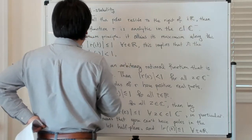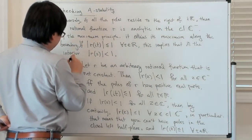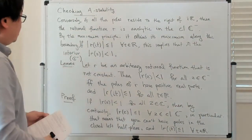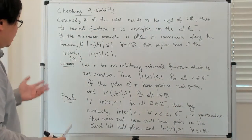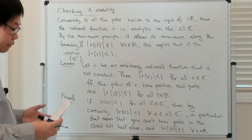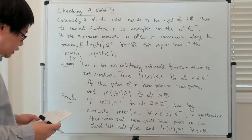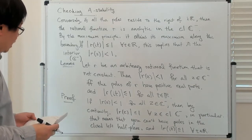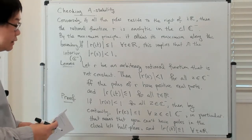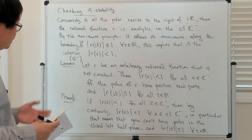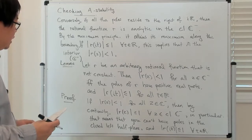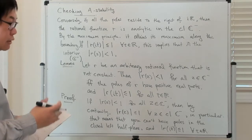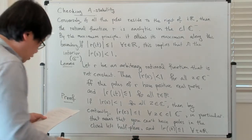And that's exactly what you need: the modulus of this function is less than 1 in the left half plane. The interior is really just this left half plane. So that proves what you need in both directions. And let's just see how you can apply this idea to analyze the A-stability of a Runge-Kutta method.